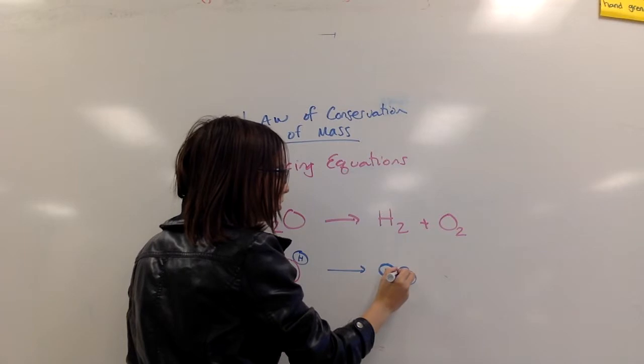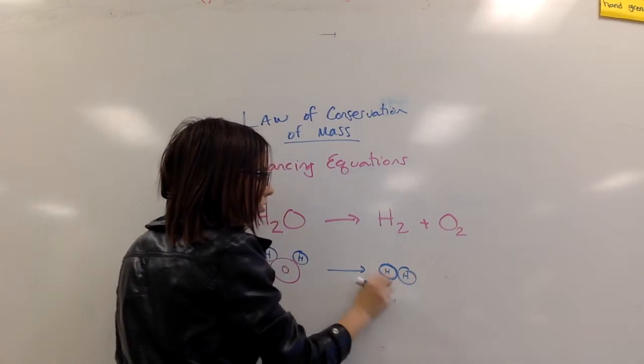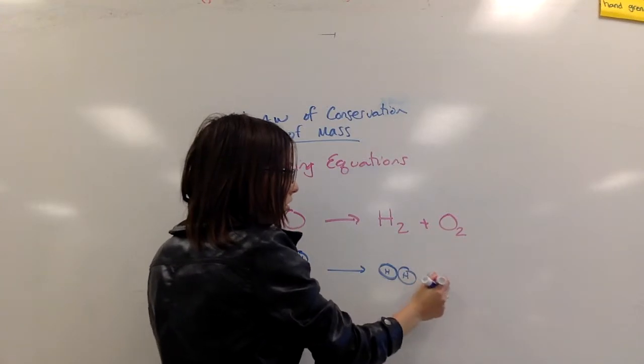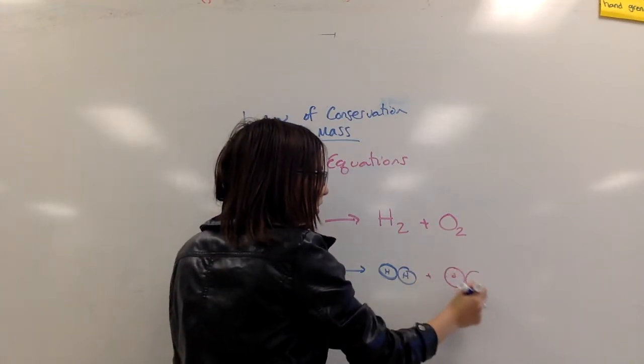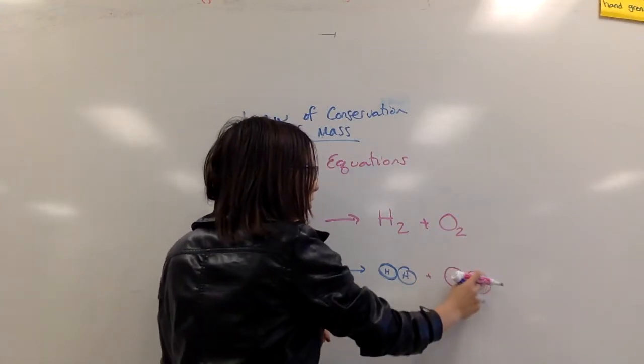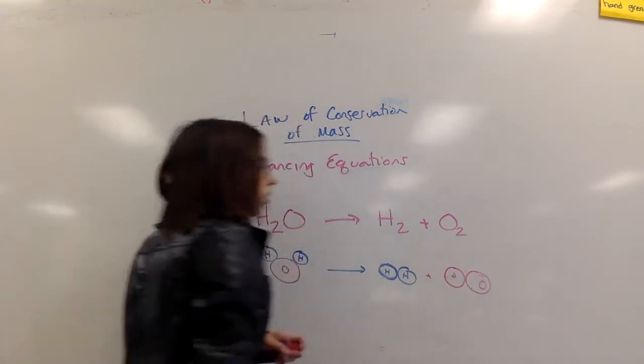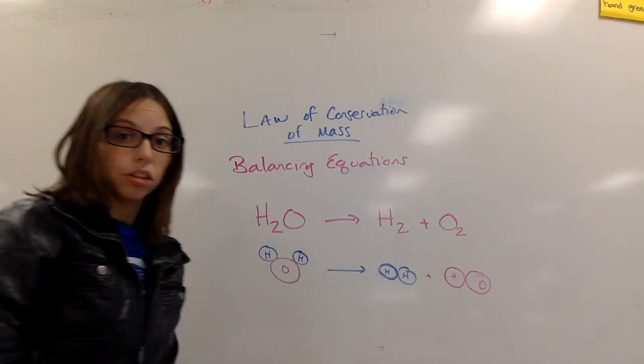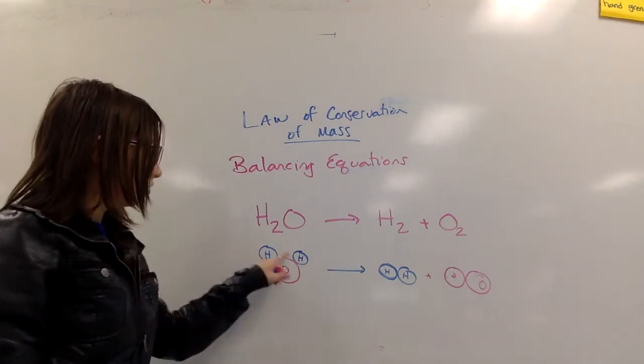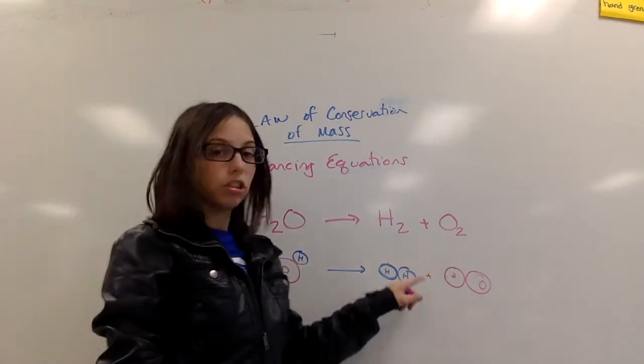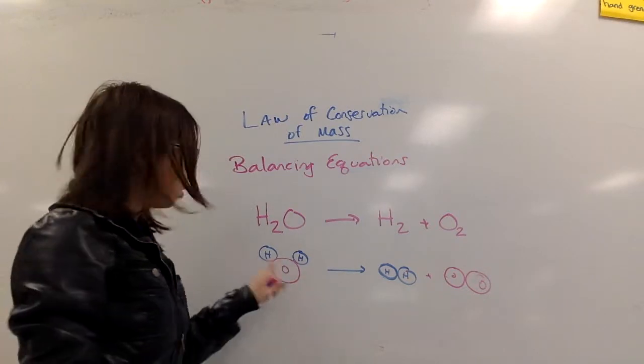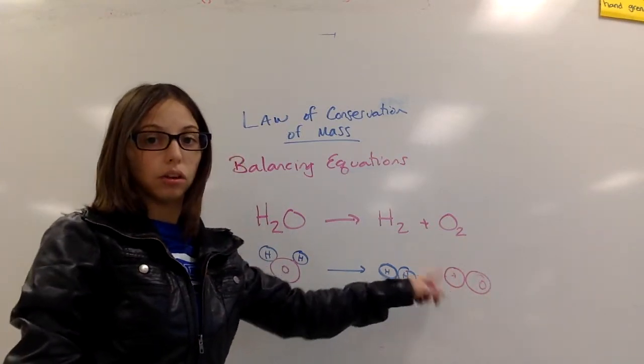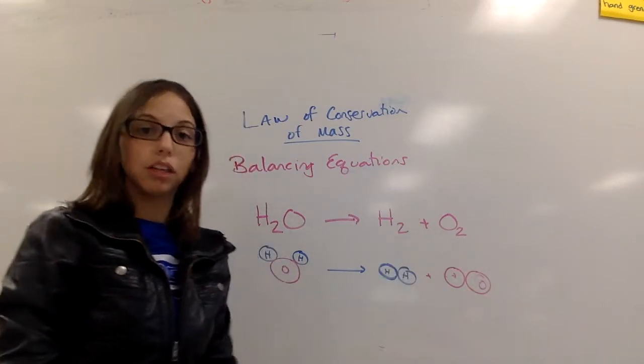There's one molecule of water, one molecule containing two hydrogens, and one molecule of diatomic oxygen. So if I look, I have two hydrogens before and two hydrogens after. So that's all good. But I have one oxygen over here and two over here, which is a problem. I don't know where this other oxygen came from. So I need to account for him.